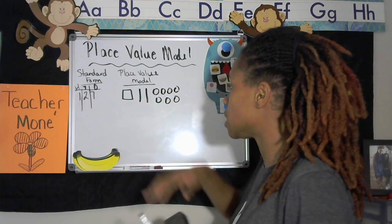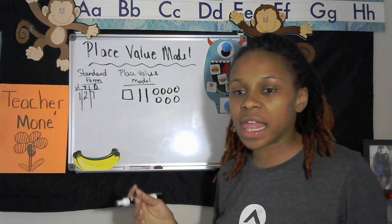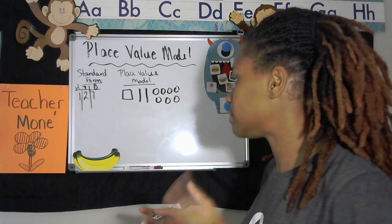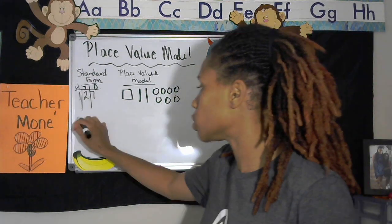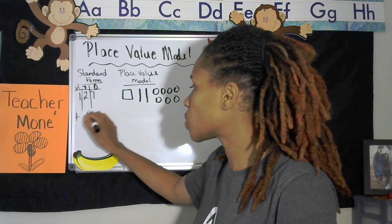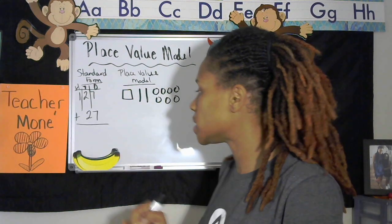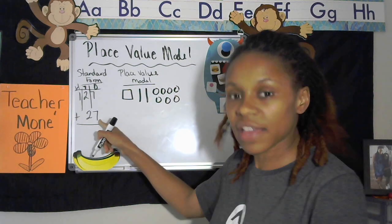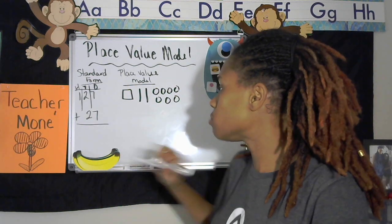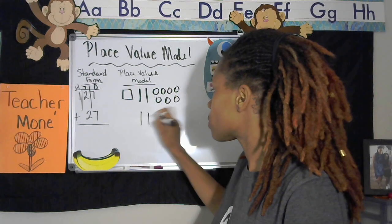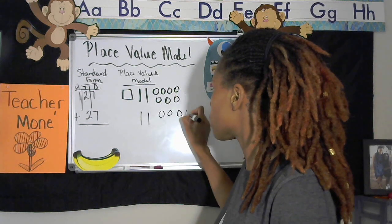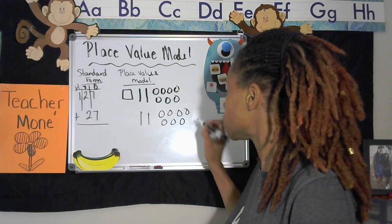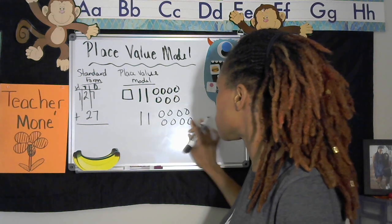Now let's take 127 and add a number to it. Let's add 27 more, so we'll do 127 plus 27. That means we're going to add seven more ones and two more tens.